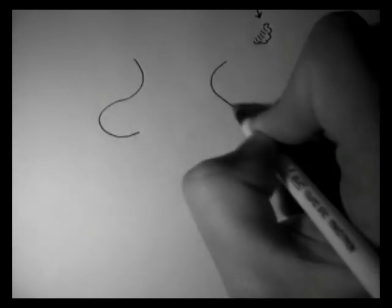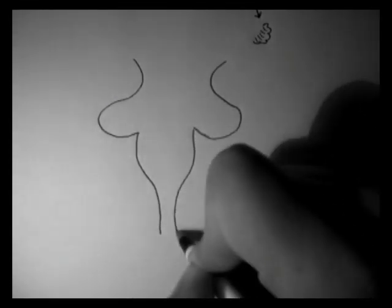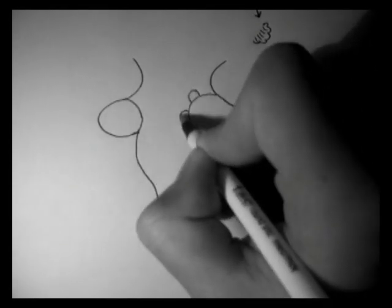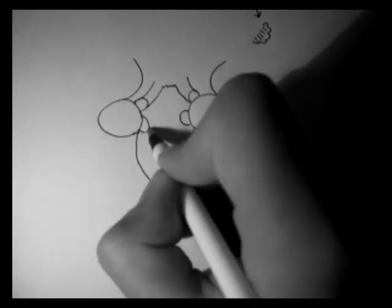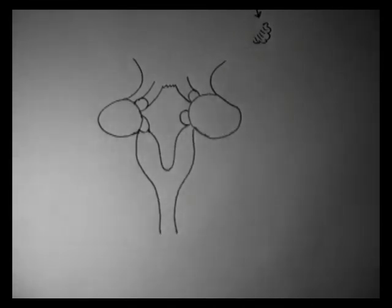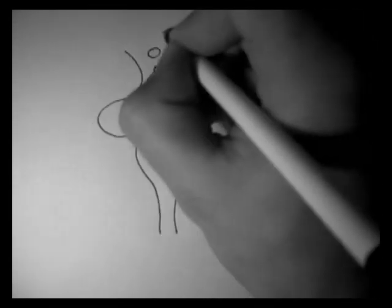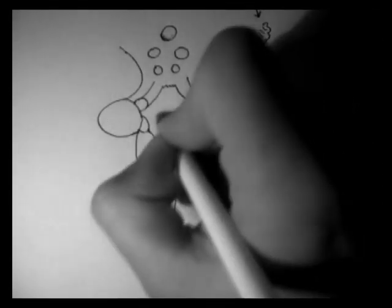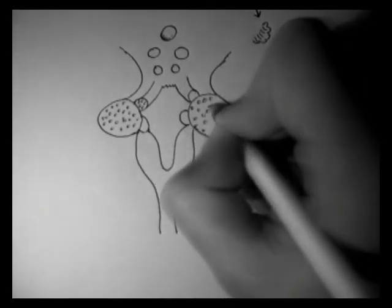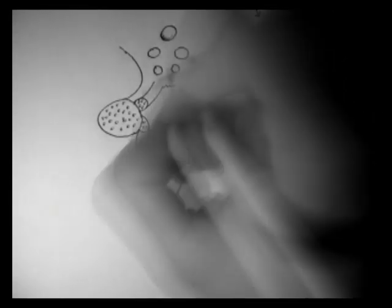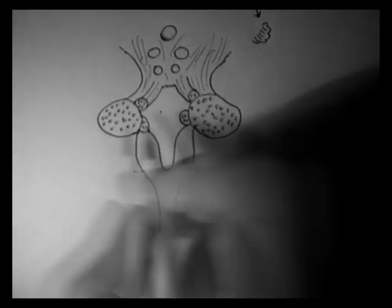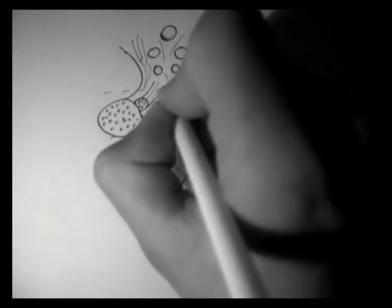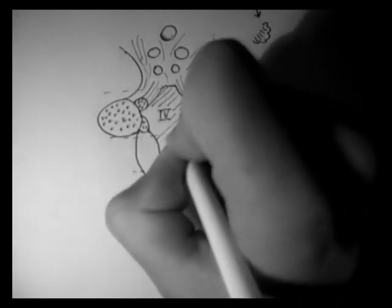So I'll begin by drawing the brainstem. Let's divide the brainstem up into its parts and put in the fourth ventricle. Remember, the fourth ventricle can only be seen here because the cerebellum has been removed. It normally sits between the cerebellum and the pons.